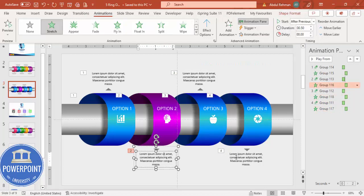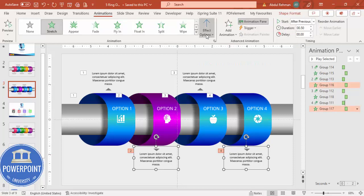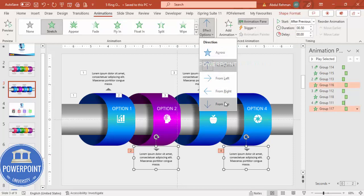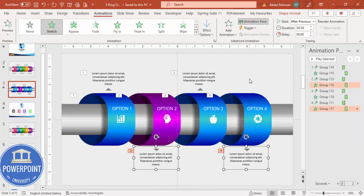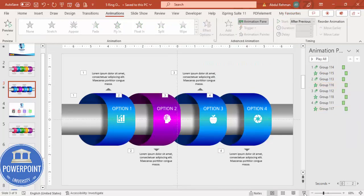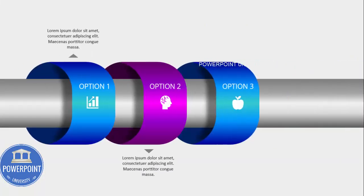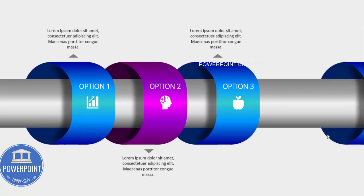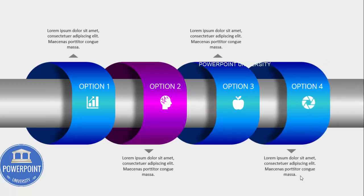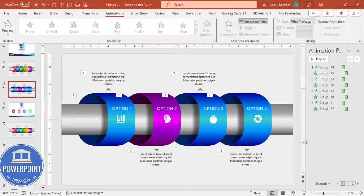Set each text/icon animation to After Previous so they follow automatically after each option appears. The triangles and supplementary text come from the top, also After Previous. Now when you click, the first option flies in, then its icon and text stretch up from the bottom, and the pointer comes from the top — giving a clean, sequential animation effect for all four options.